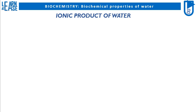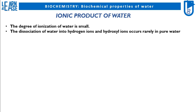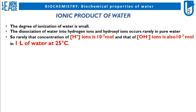Now I will move on to the next topic: the ionic product of water. The degree of ionization of water is small; the dissociation of water into hydrogen ions and hydroxyl ions occurs rarely in pure water. So rarely that the concentration of H plus ions is 10 raised to minus 7 moles, and that of OH minus ions is also 10 raised to minus 7, in one liter of water at 25 degrees Celsius.